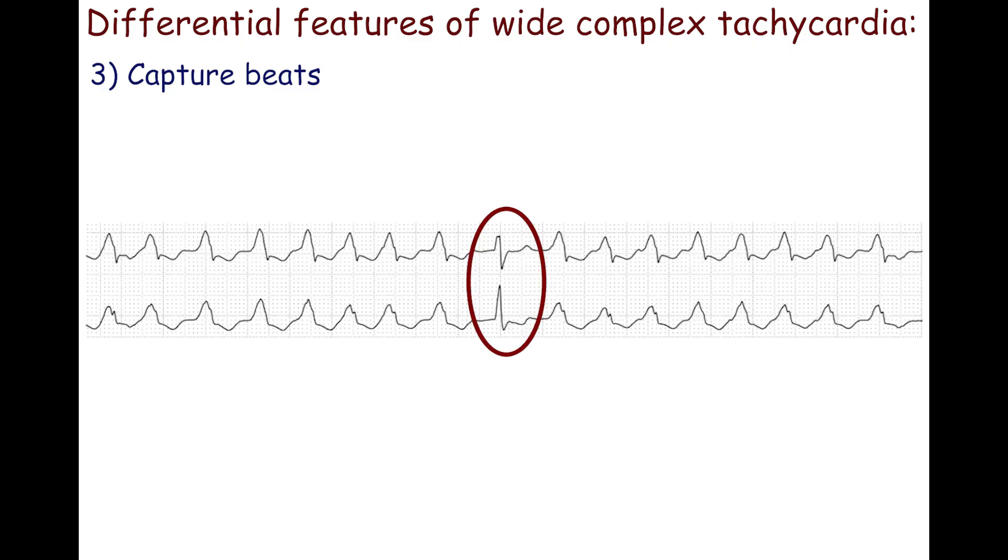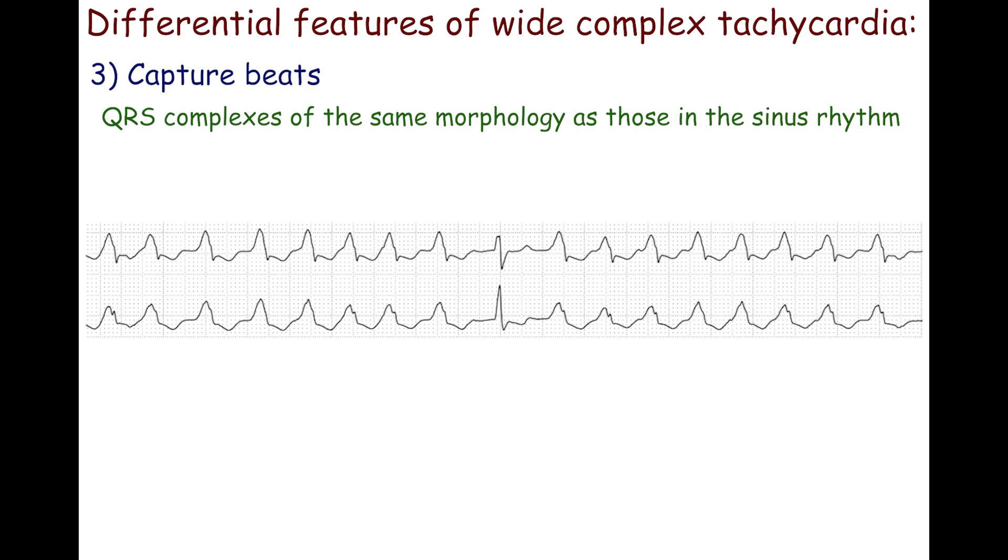The third feature is capture beats. They are QRS complexes of the same morphology as those in the sinus rhythm. They occur due to ventricular capture of the supraventricular impulse conducted over the atrioventricular node, His bundle pathway. It's highly specific for ventricular tachycardia as well.